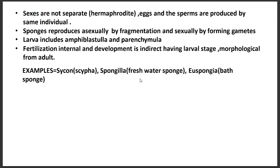The sexes are not separate, so sponges are called hermaphrodites — eggs and sperm are produced from the same individual. They reproduce asexually with the help of fragmentation, where the body fragments into different parts. Sexually, they reproduce by gamete formation. The larva stages — amphiblastula and parenchymula — must not be forgotten.